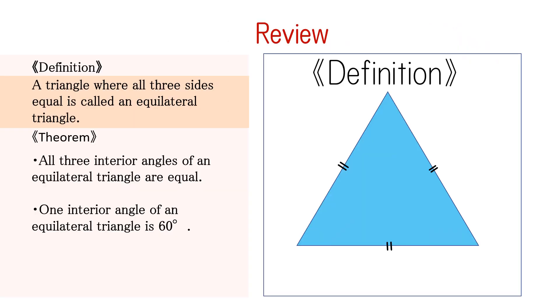Finally, let's review what we have learned. First, going over terminology, a triangle where all three sides are equal is called an equilateral triangle.